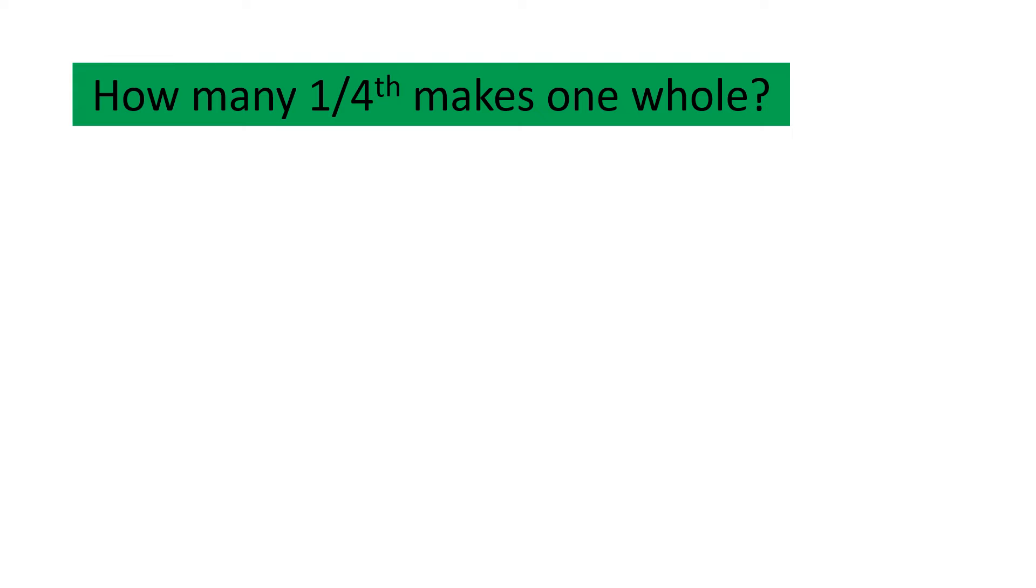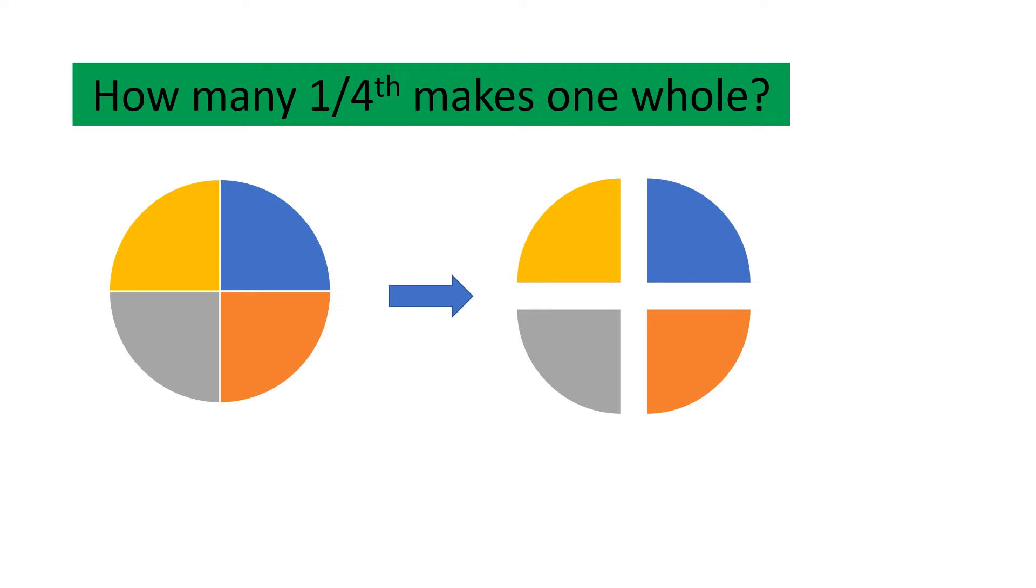How many one fourth makes one whole? When we are saying one fourth, it means that we have divided the whole into four equal parts and each part is considered as one fourth. That means, here one part, two part, three part and four part. So, four parts together will make one whole. That means, how many one fourth will make one whole? Answer is four.